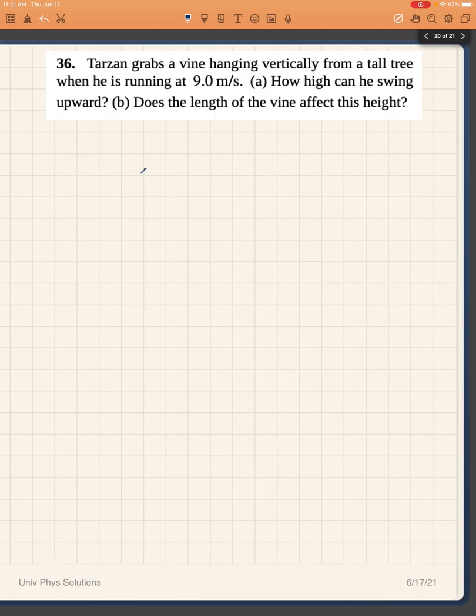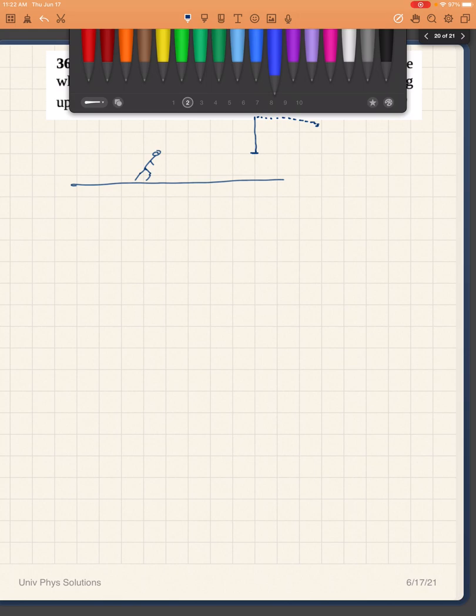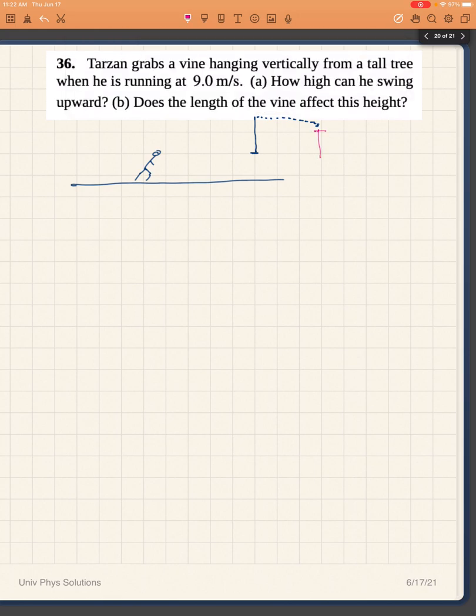If Tarzan is running here and the vine is right here, he grabs the vine and swings to some height. If we take any of this as a point of reference, whether it's the tip of the vine or Tarzan's midsection, what we are interested in is the change in height. So this will be the height that we will consider.